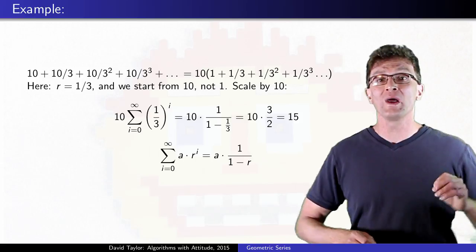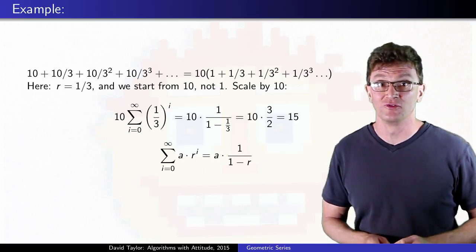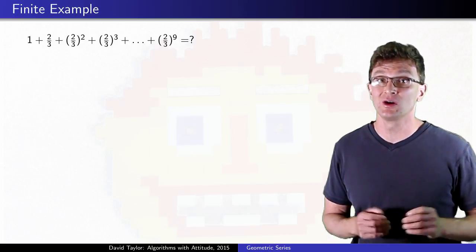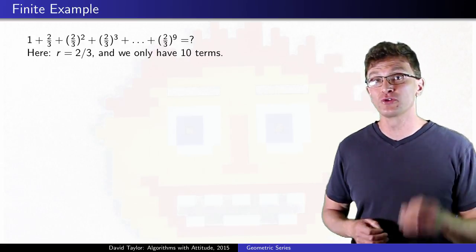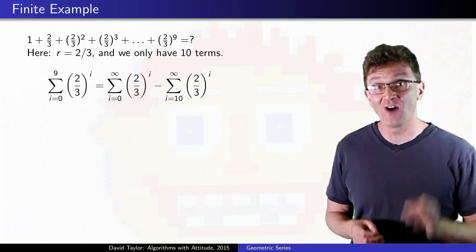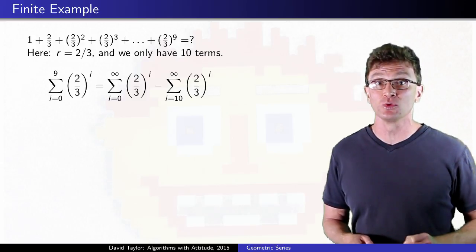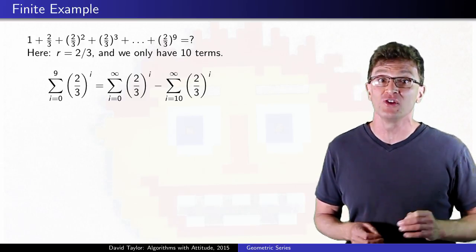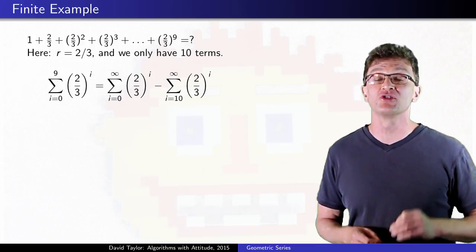Ok, what happens if you don't want to sum out to infinity, but just want a few terms? Again, you can either go through a derivation similar to before, or you can use the fact that a finite geometric summation is equal to the difference between two infinite summations, each with different starting points.